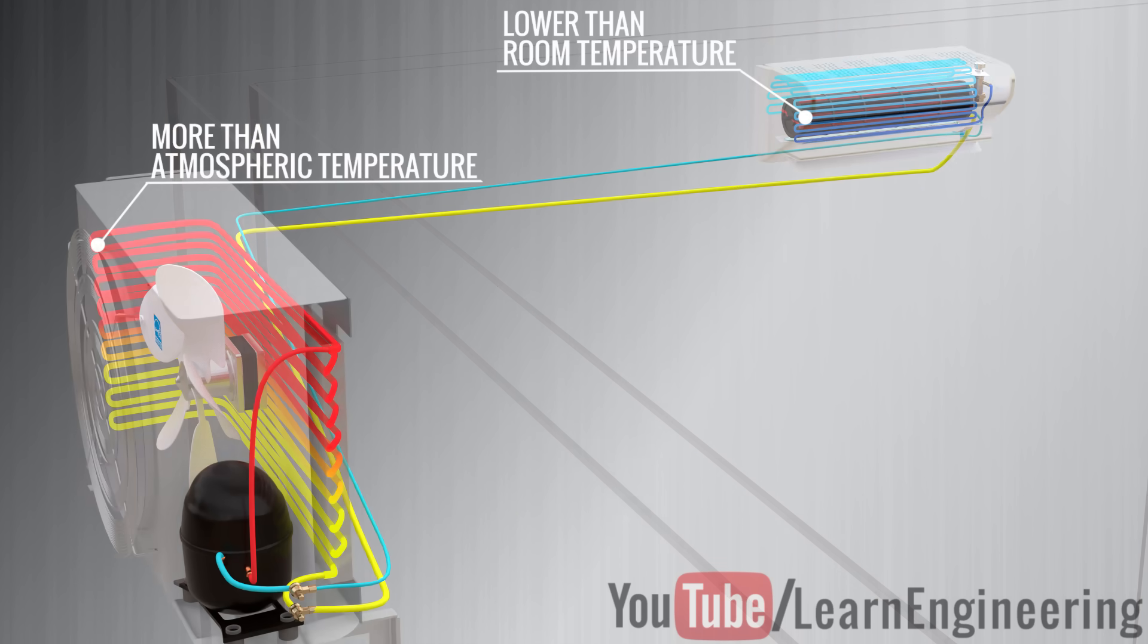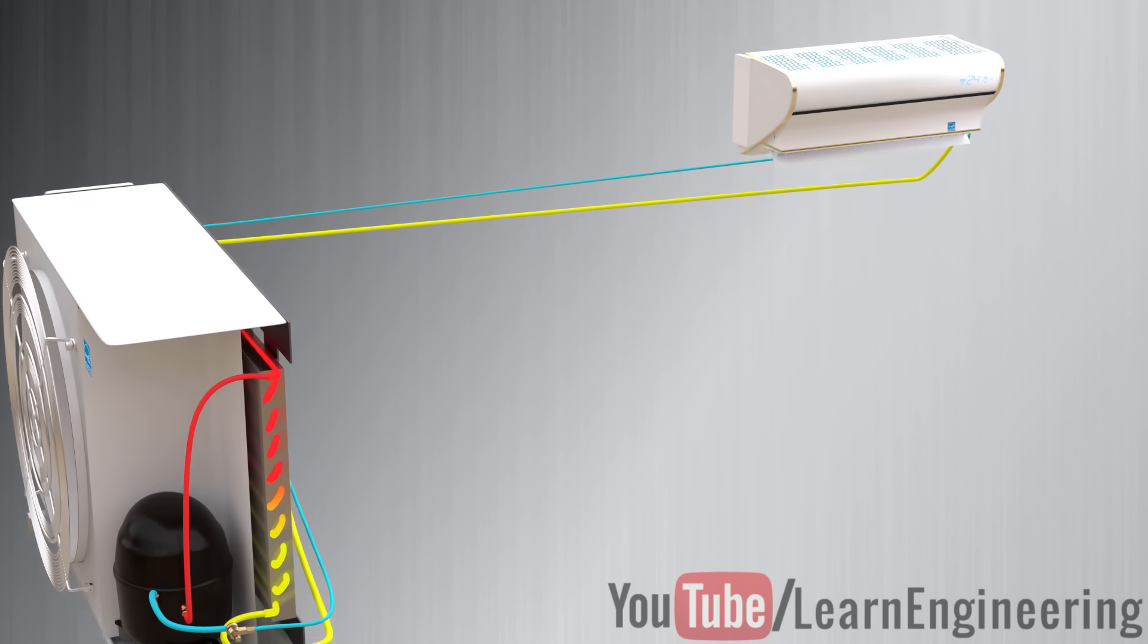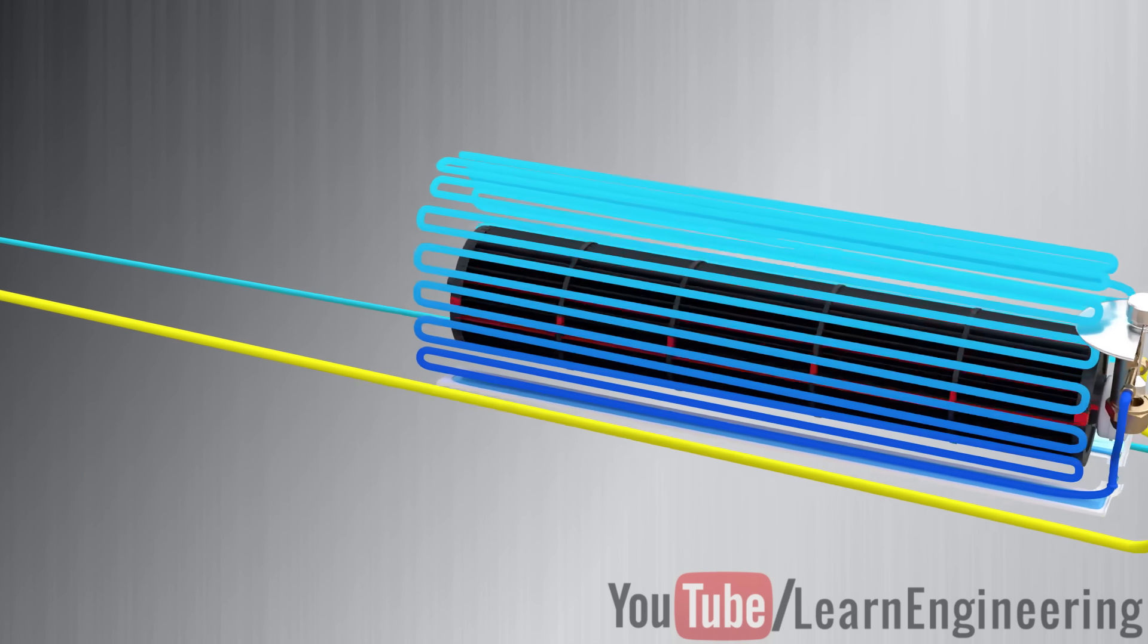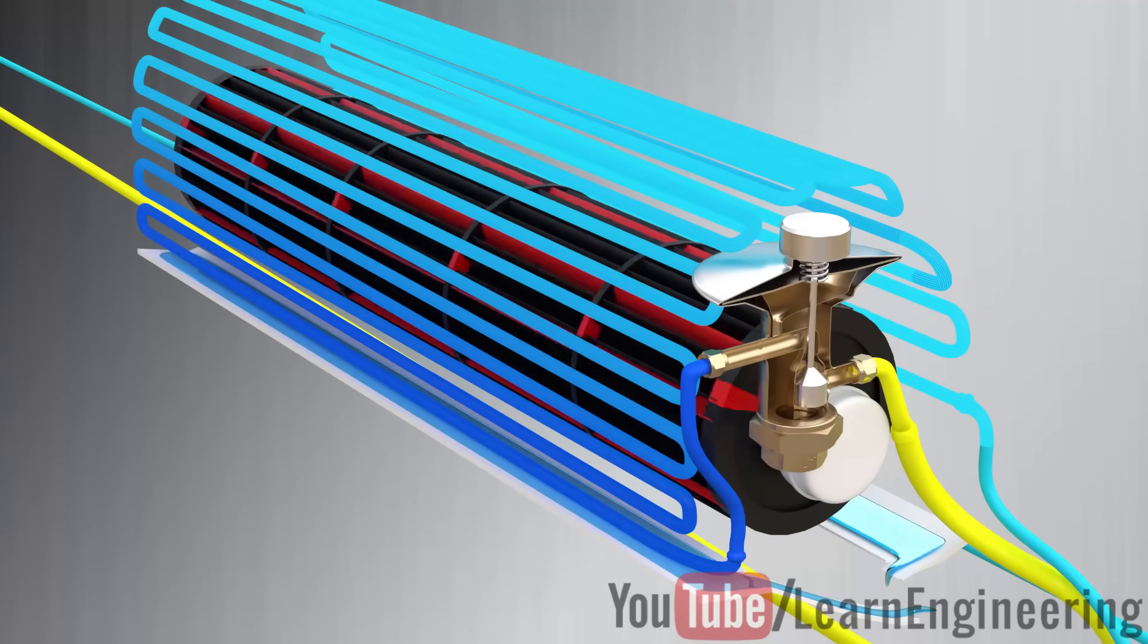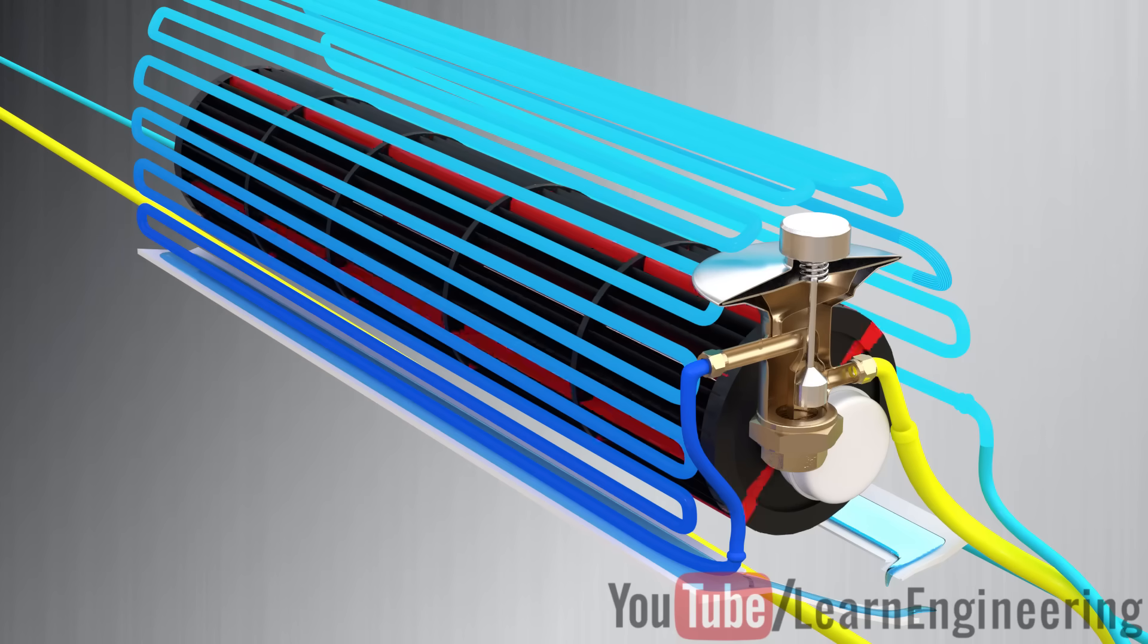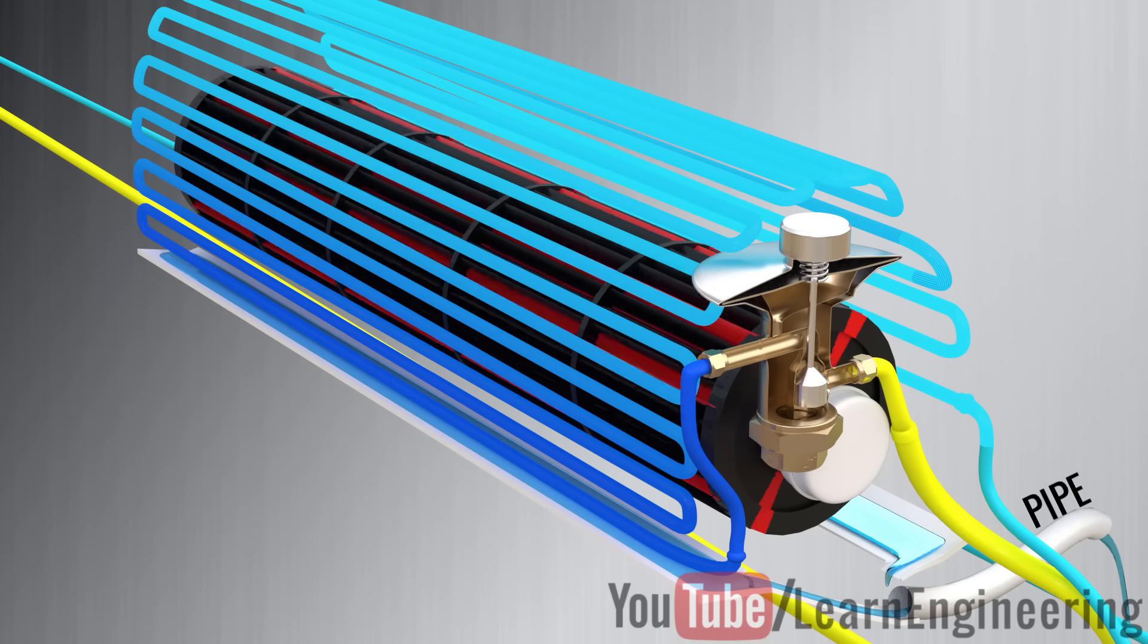There are some practical issues with this design. Near to the evaporator coils, the air temperature will be quite low. This will lead to water condensation on the evaporator coils. That's why we need a pipe to remove this water condensate.